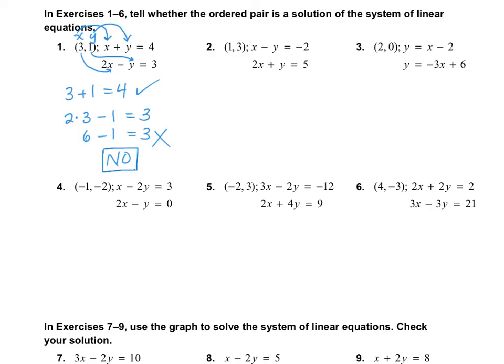So let's take a look at number 4. We're going to do the same thing. We're going to substitute in those numbers. So this is my x, and this is my y. So the first equation is x, which is -1, minus 2 times y, which is -2 in the point, equals 3. So that's -1, and then this turns into a plus 4, equals 3. So that does work.